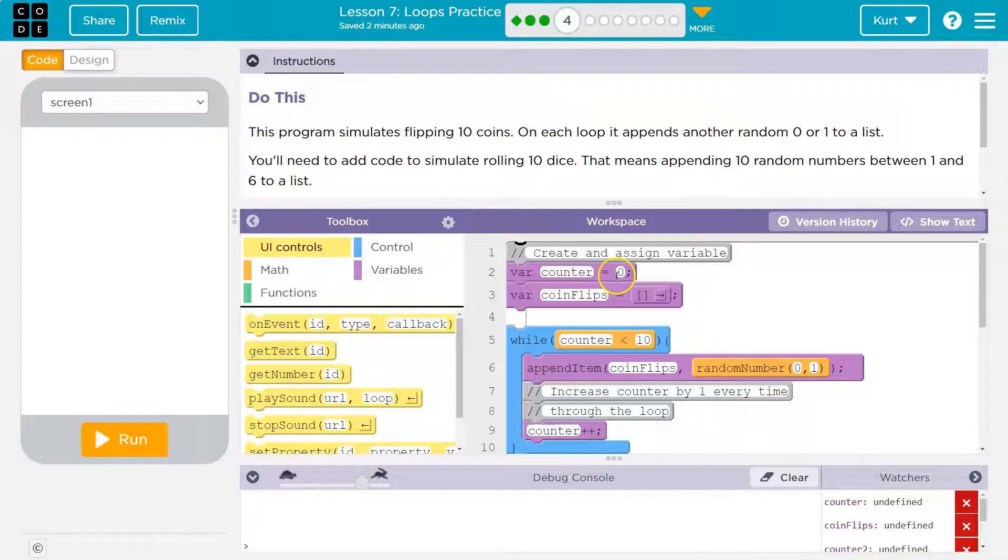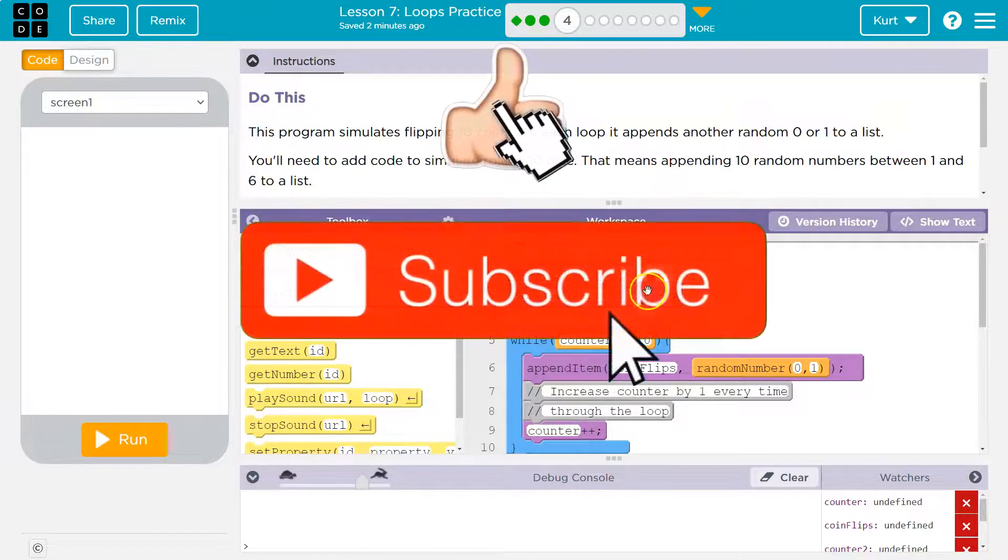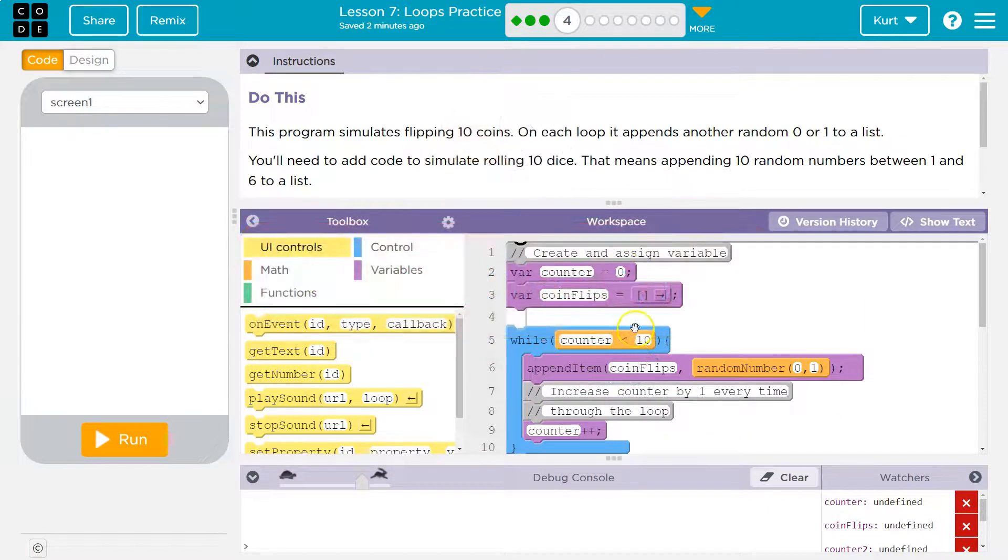Okay, so we start off with counters equal to zero, and then we have this variable coin flips, which is an empty list. We then say while counters less than 10, and it is right now it is zero. While it's less than 10, okay, do this.